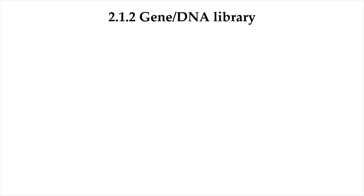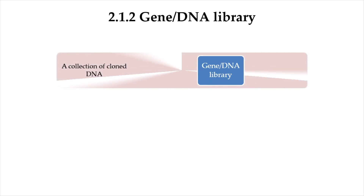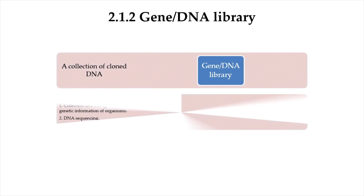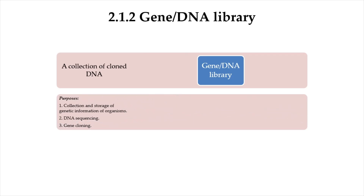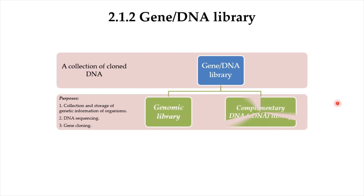Subtopic 2.1.2 is the Gene or DNA Library. A gene or DNA library is a collection of cloned DNA. Its purpose is to provide a collection and storage of genetic information of organisms. It is also useful in DNA sequencing and gene cloning. There are two categories of DNA library: the genomic library and the complementary DNA, or cDNA, library.